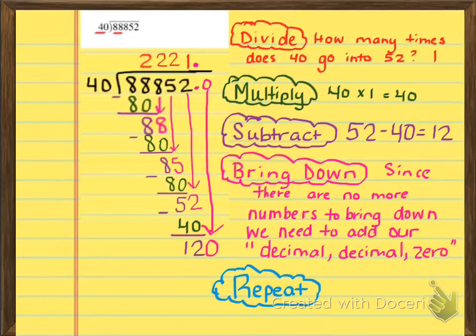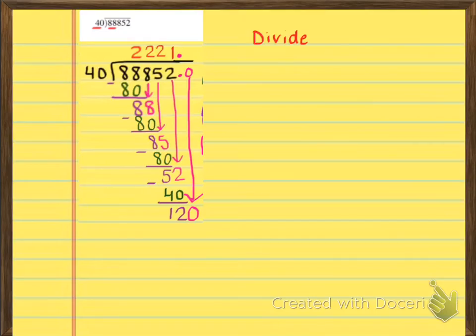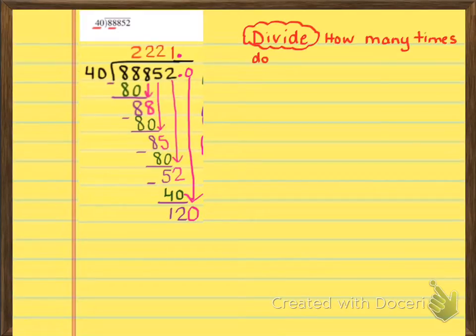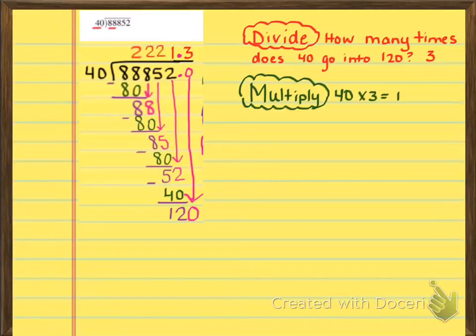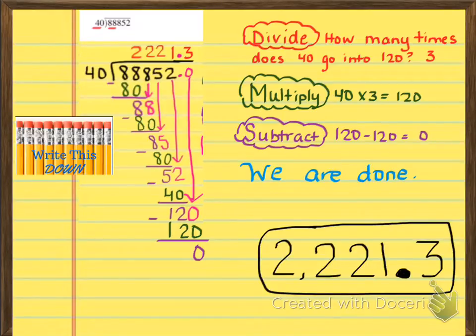So now we have 120. You can start to see this problem is probably not going to be a repeating decimal. It looks like it's going to be a terminating decimal. Remember, that's a decimal that ends, basically. So you're going to want to make sure to write everything down on this page. And then we're going to do it one more time. How many times does 40 go into 120? So that's going to be 3. Then we're going to multiply 40 times 3, get our 120. And then 120 minus 120 is 0. So for this problem, you are done. This was, in fact, a terminating decimal. So the final answer is going to be 2,221.3.